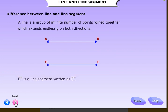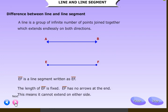EF is a line segment written as EF bar. The length of EF is fixed. EF has no arrows at the end. This means it cannot extend on either side. This is the difference between the line and line segment.